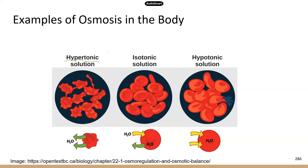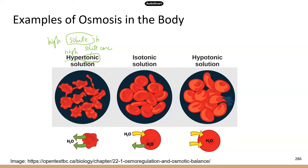Hypertonic solution — when you see the 'tonic' part of this word, just think of it as solute concentration: how much salt, ions, or proteins you have. 'Hyper' means high, so a hypertonic solution has a higher concentration of solutes than what's inside the cell. A hypertonic solution has a higher solute concentration than what's in our cells.